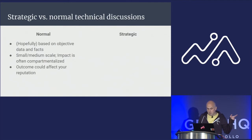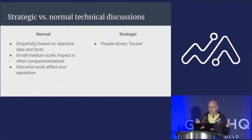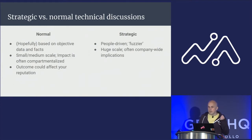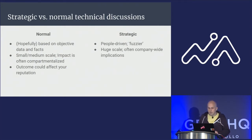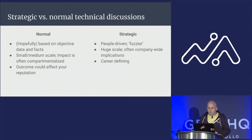Now let's look at strategic technical discussions. Ideally these are also based on data and facts, but there's a much fuzzier people element to these. There are a lot more stakeholders involved that will want to have a say, primarily because these decisions tend to be much larger in scale — they could affect the entire company. If you make a decision of this magnitude wrong, you might have some explaining to do to shareholders in a few years. GraphQL isn't necessarily of this size, but it certainly can be, and so you should expect that a lot of people are going to want to have a say.